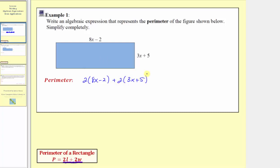Now because we're asked to simplify the expression, we want to clear the parentheses by distributing and then combine like terms. We'll distribute 2 here as well as here. 2 times 8x is 16x, and we have minus 2 times 2, so we have minus 4, plus 2 times 3x is 6x, and then we have plus 2 times 5, which is 10. Now we combine like terms. We have 2x terms and we have 2 constants. 16x plus 6x is 22x, and negative 4 plus 10 is equal to positive 6, so we have plus 6.